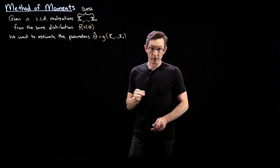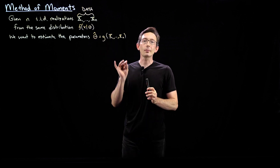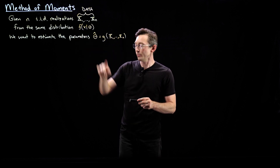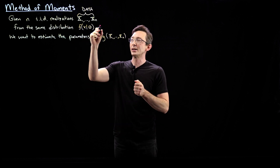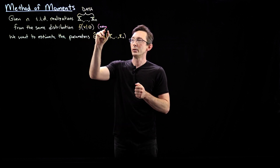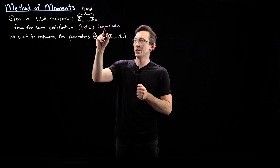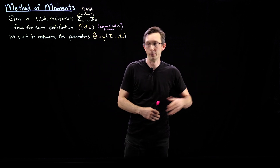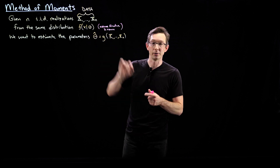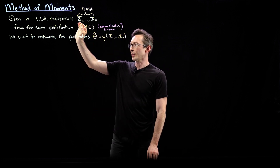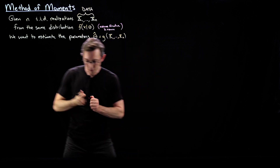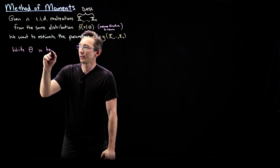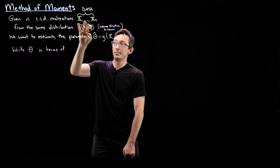The way the method of moments works is we're going to take these parameters and write them in terms of the moments of that probability density function. We assume the structure of this PDF is known — you're generally assuming you're dealing with Poisson or normal, and you don't know the lambda or the mu and sigma, and that's what you're trying to find.